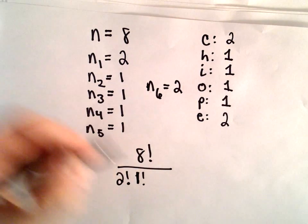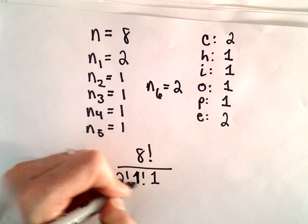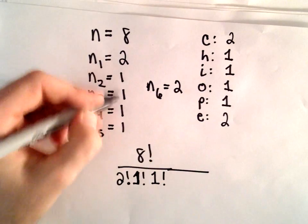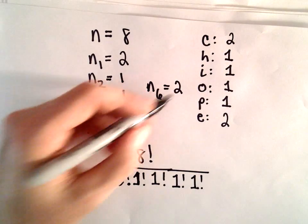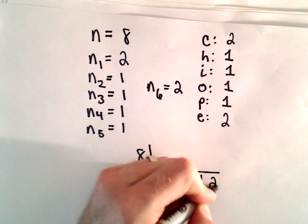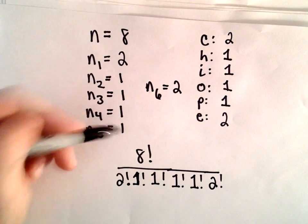So 1 factorial is clearly just 1, but just for completeness sake, let's write them all down. 1 factorial multiplied by another 1 factorial multiplied by another 1 factorial. And we've got another 2 factorial. So I think we've got them all here.